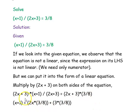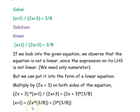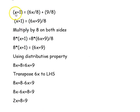Now simplifying: the (2x + 3) terms cancel, leaving x + 1 on the left-hand side. On the right-hand side, using the distributive property: 2x times 3/8 plus 3 times 3/8. Simplifying the right-hand side gives x + 1 = 6x/8 + 9/8.